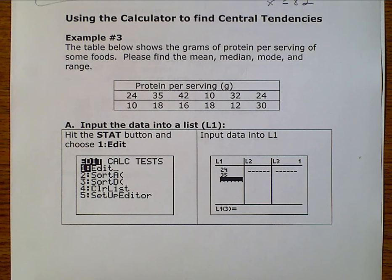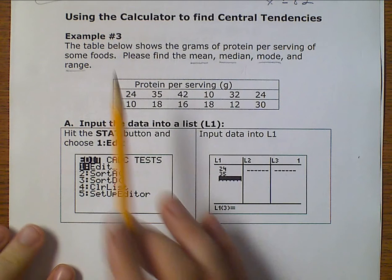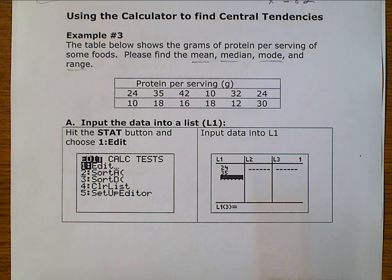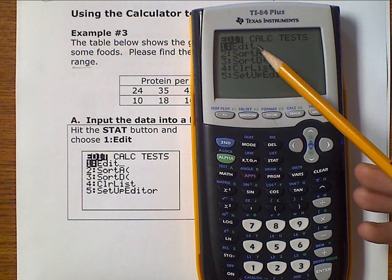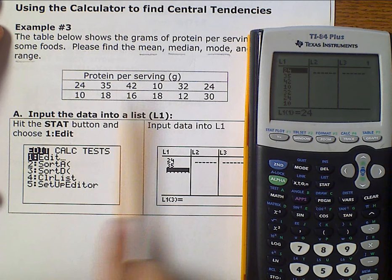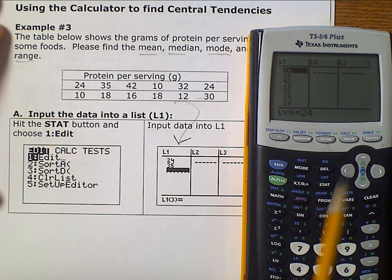Let's look at example three, where we'll start using our calculator. They give us a table of information and we want to find the mean, median, mode, and range. The calculator can do most of this for us. We go to STAT then EDIT. I've already typed all the numbers from the table into L1.